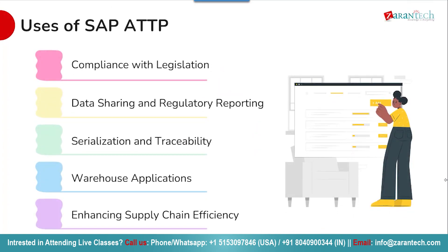Let us discuss the uses of SAP ATTP. There are several primary use cases for SAP ATTP in the pharmaceutical industry. First, compliance with legislation — it helps companies stay up to date and compliant with evolving track and trace regulations in different markets. Second, it enables regulatory reporting by making required data available in the right format. Third, it facilitates serialization and traceability down to the individual sellable unit. Fourth, it integrates with warehouse management processes for efficiency, and overall it enhances supply chain efficiency and integrity.